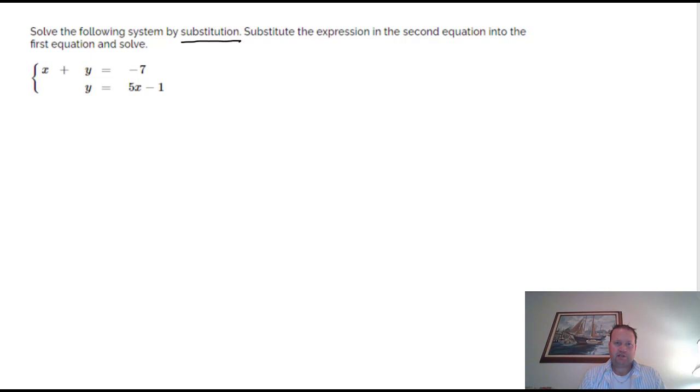We're going to use what's called substitution, which means we're looking for one of the variables to be by itself. If you notice, this particular y variable right there is by itself, and this right here is what y equals. y is equal to 5x minus 1 in the second equation.